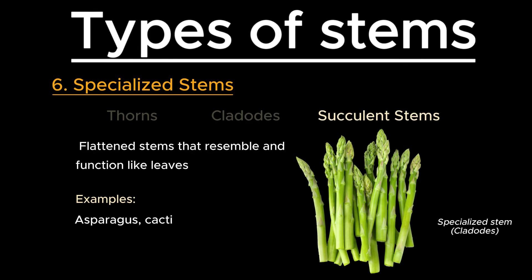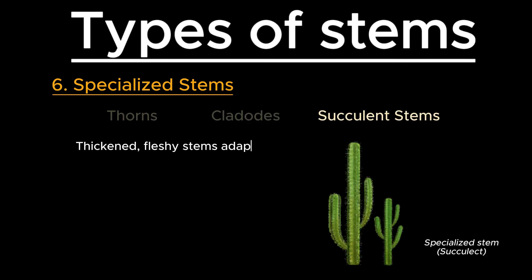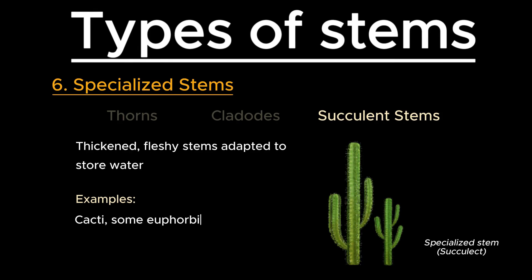Succulent stems are thickened, fleshy stems adapted to store water, such as in cacti and some euphorbias.